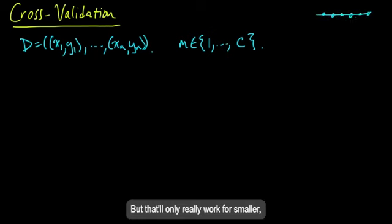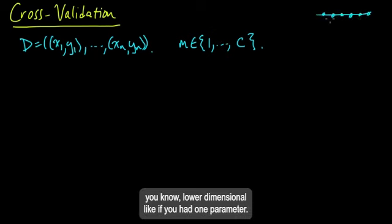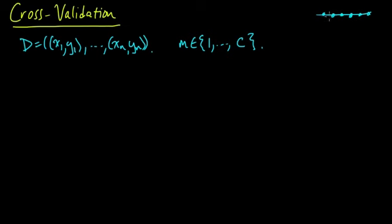But that'll only really work for smaller, lower dimension cases, like if you had one parameter. And so in higher dimensions for continuous value parameters, cross validation is not really going to work very well because you would have to have too many discretized points in some high dimensional space.